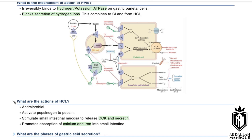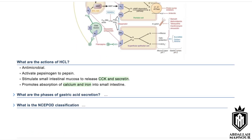What are the phases of gastric acid secretion? There are three phases: the cephalic phase, which starts when food is in the mouth; the gastric phase, which produces gastric enzymes; and the intestinal phase, during which secretin and cholecystokinin are released.